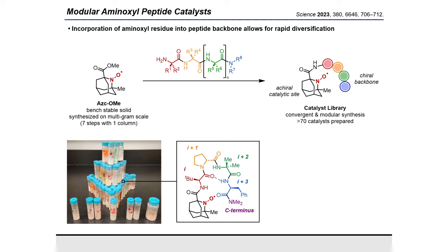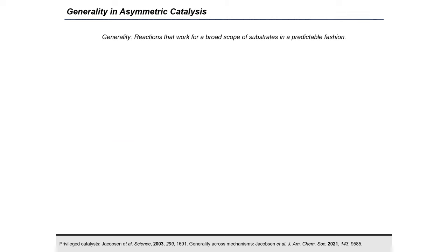ASK-OAMI is a readily prepared bench-stable solid, requiring only seven steps with one chromatographic step to generate the methyl ester, which could then be hydrolyzed and appended to a diverse array of peptide backbones for ready synthesis of a catalyst library. We were able to prepare over 70 catalysts throughout this campaign. With all this ready diversity, we asked ourselves what chemistry could we unlock through the modularity and tunability of our peptide catalysts, as we're in a unique space to survey a lot of different chemical space.